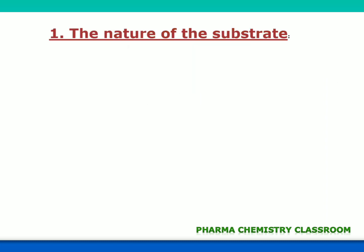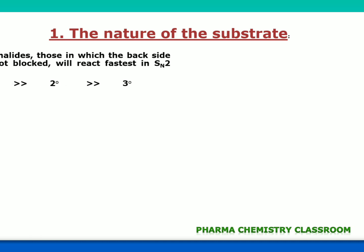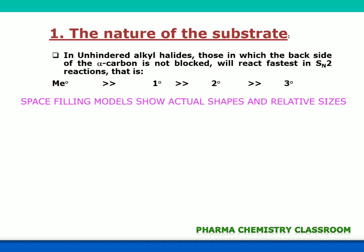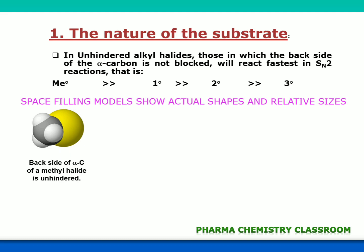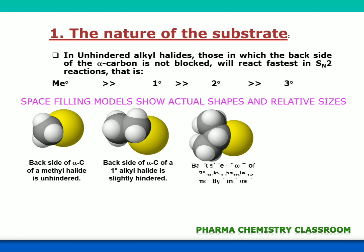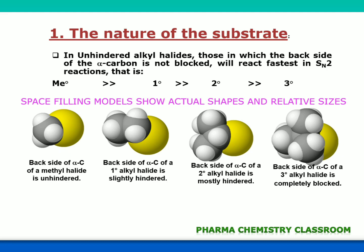The first factor is the nature of the substrate. Unhindered alkyl halides undergo SN2 reaction faster. The space-filling models show what happens as the relative size of the alkyl halide increases. This is methyl halide — the backside of the alpha carbon is unhindered. This is primary alkyl halide — it is slightly hindered. This is secondary alkyl halide — it is mostly hindered. And this is tertiary alkyl halide — it is completely blocked.